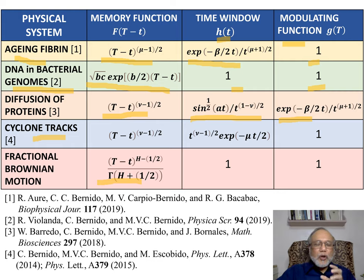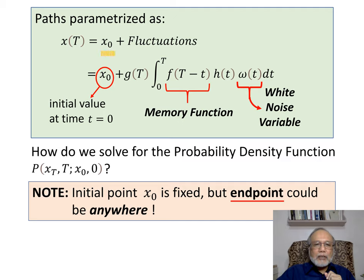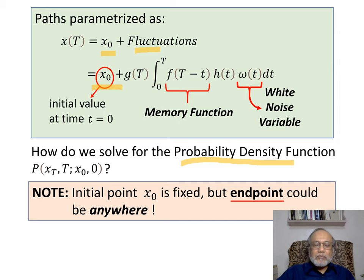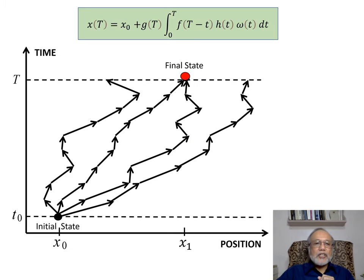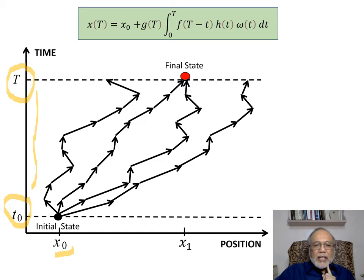How do we proceed normally when we try to calculate the probability density function? We have parameterized our initial point plus fluctuations. The initial point is fixed at x-naught, but since it's x-naught plus fluctuations, the endpoint at some final time T could end anywhere. So pictorially, we start at some fixed point x-naught at initial time t-naught, and at some final time t, the fluctuation could end at different locations.